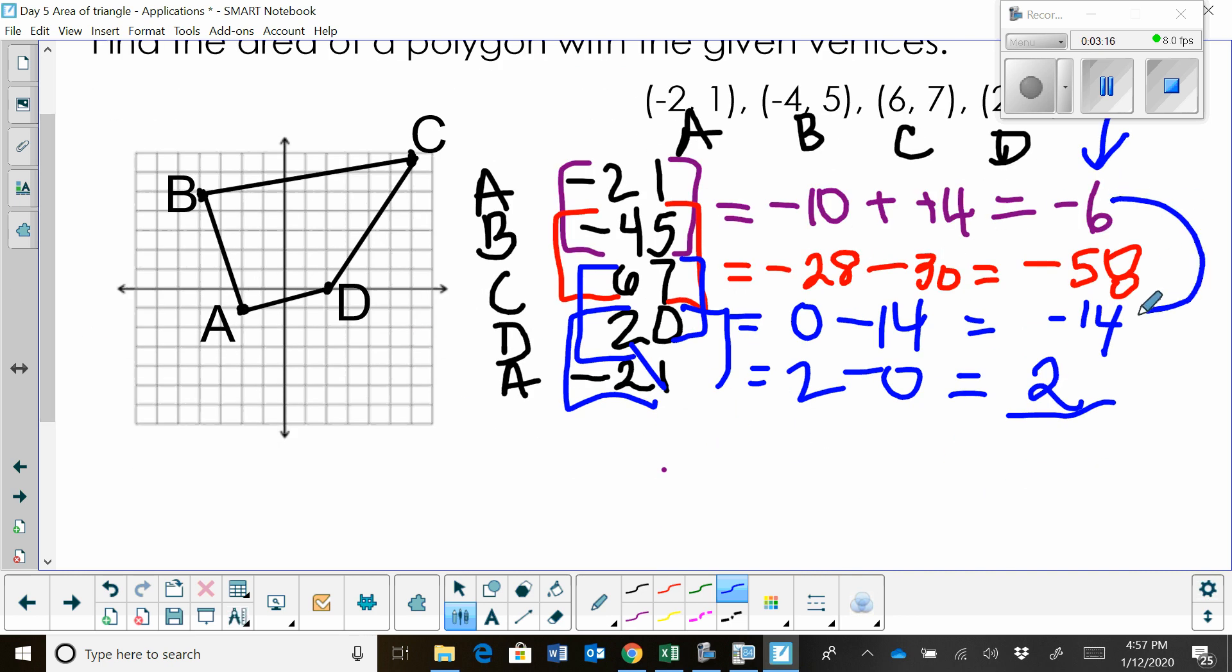Now let's add all this up. So negative six, negative 14, that's negative 20. Negative 20 minus 58 is negative 78. So all my negatives add to negative 78. And then I'm going to add two. That's going to give me negative 76.